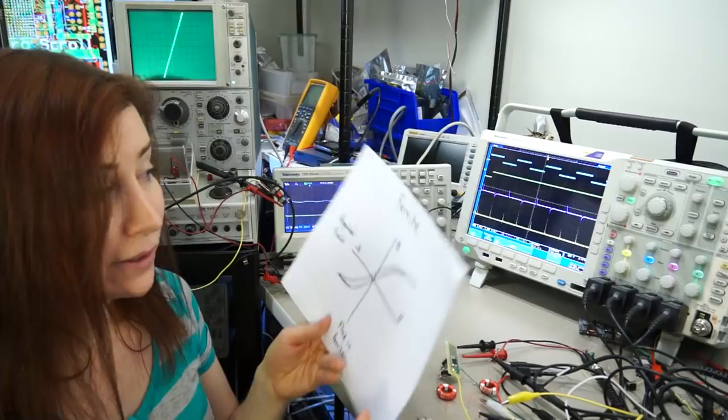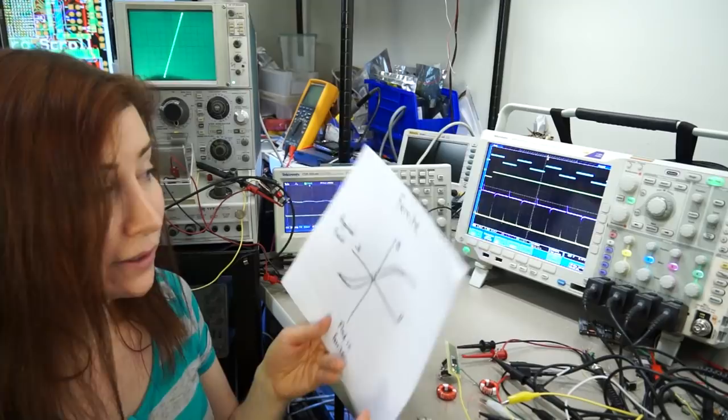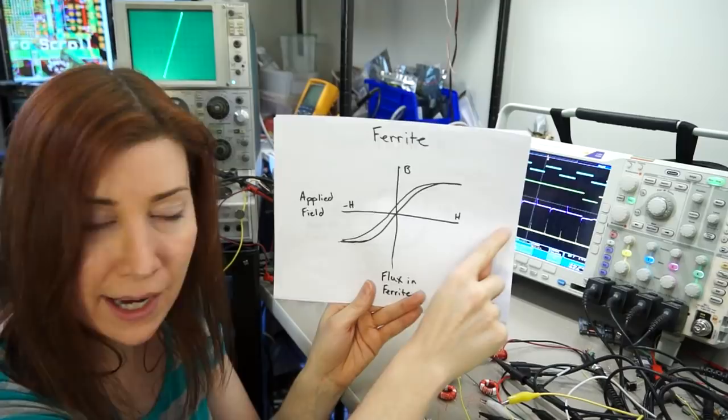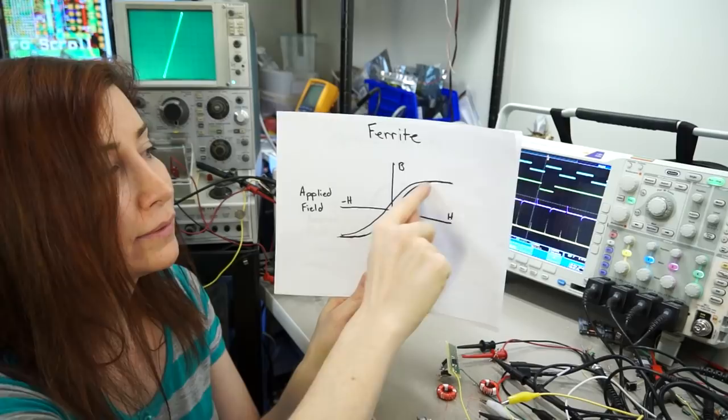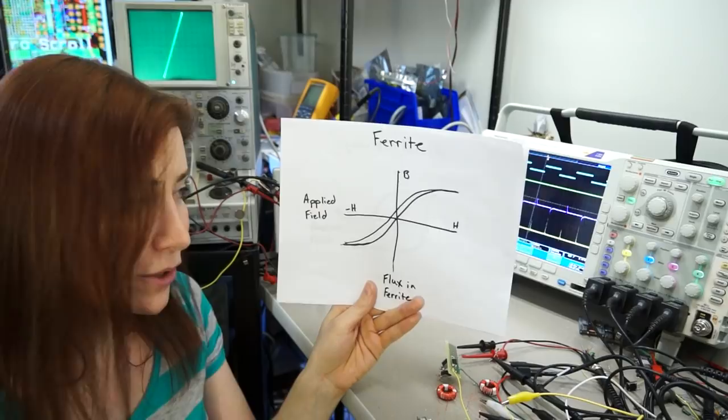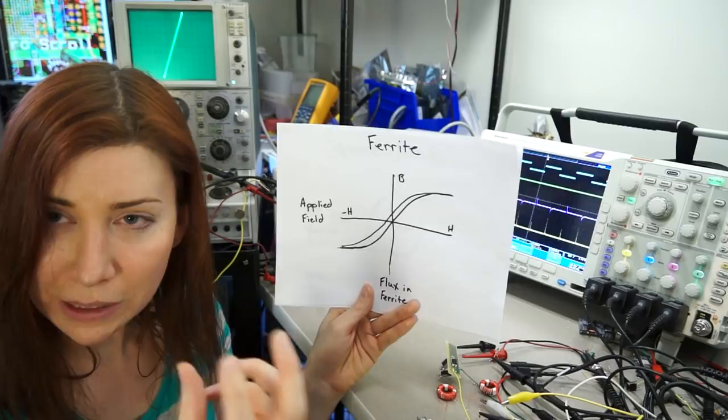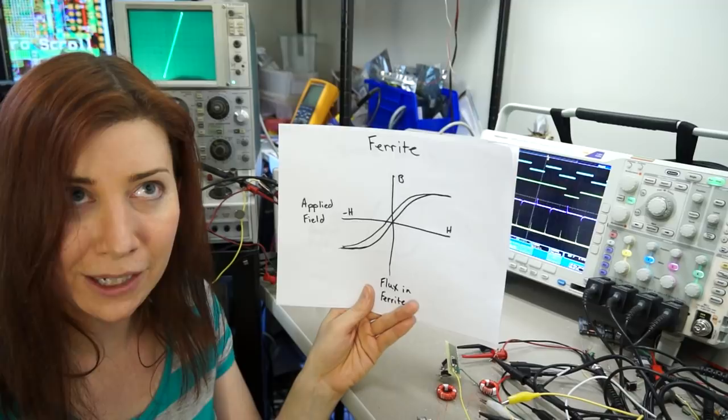Alright, so if we take a look at core materials like ferrite, here's a chart that shows applied magnetic field in this axis and flux in the ferrite in this axis. So the more field that we apply, the more flux is in the ferrite, which is pretty intuitive. There's a point where the ferrite is going to saturate, it can't hold any more flux, so then it's going to have less flux and the magnetic field is going to have to go to the surrounding air and you're going to get less coupling in your transformers.